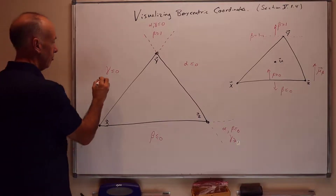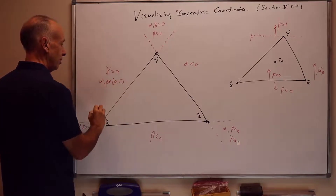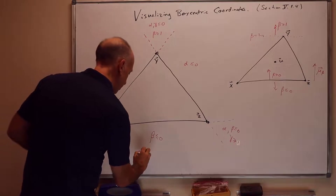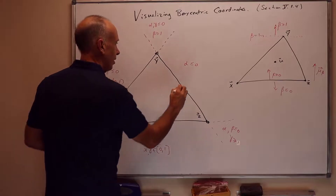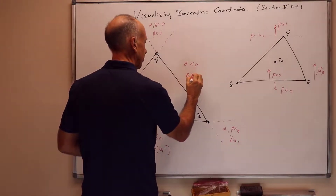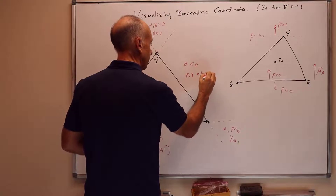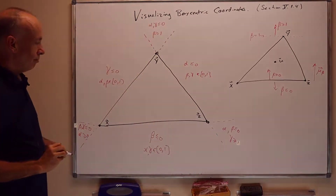In this region, alpha and beta are both in the interval [0, 1]. In this region, alpha and gamma are both in the interval [0, 1]. And in this region, beta and gamma are both in the interval [0, 1].